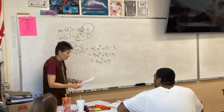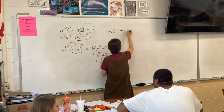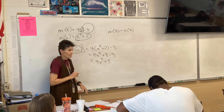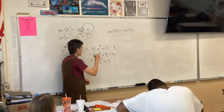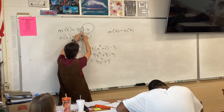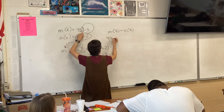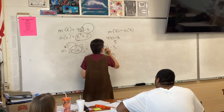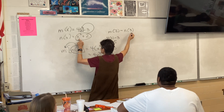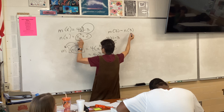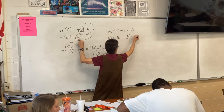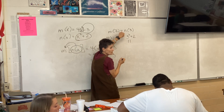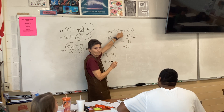All right, part b. What do I do here? Plug 2 into m — so plug 2 right here. That's going to be 4(2) - 3, which is 5. Now I've got to do the same thing here: plug 3 into n, so that's 3² + 2, which is 11. Then subtract them, so the answer is negative 6.